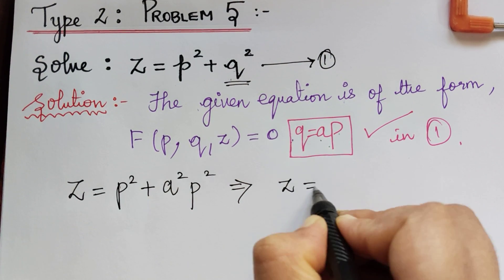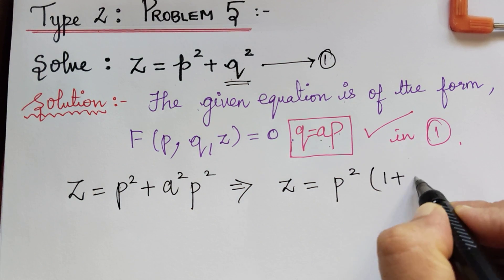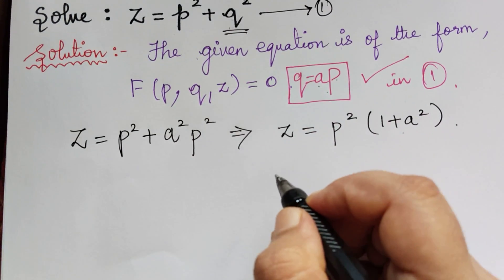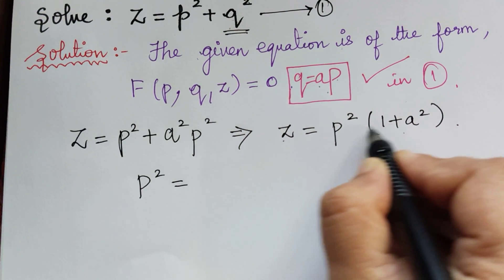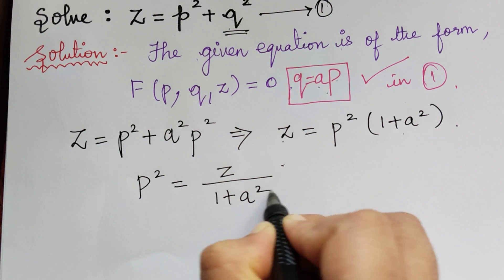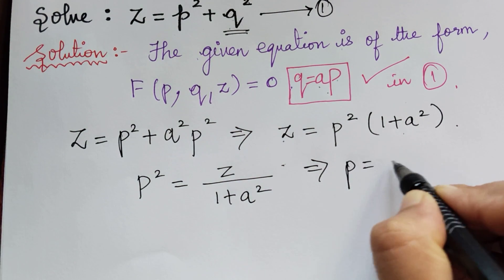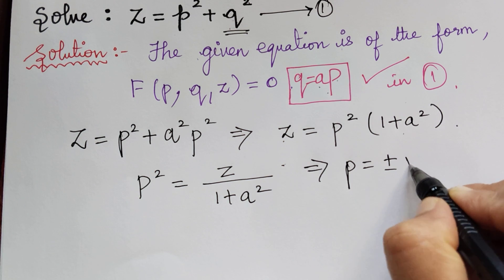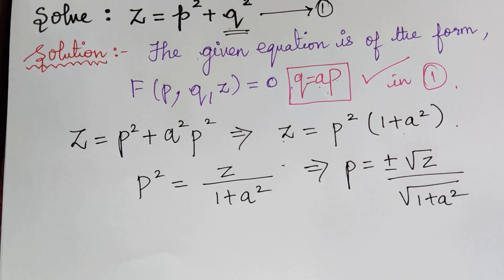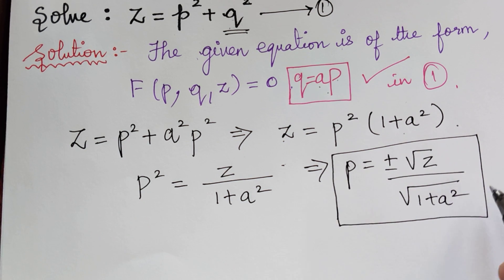From this, z will be equal to, taking p square common, you will have 1 plus a square. Taking this to the other side, we get p square equal to z divided by 1 plus a square. So what will be the value of p? p will be equal to plus or minus square root of z divided by square root of 1 plus a square.